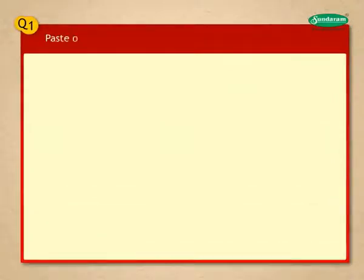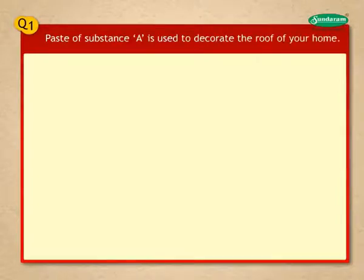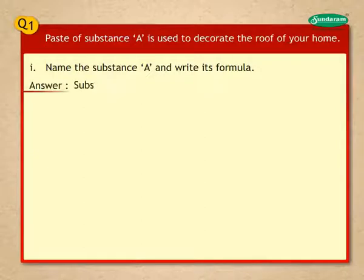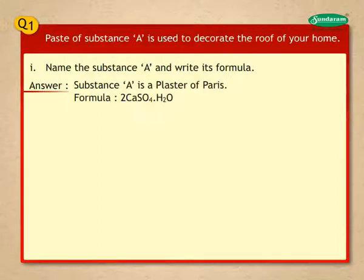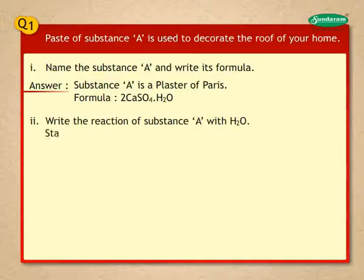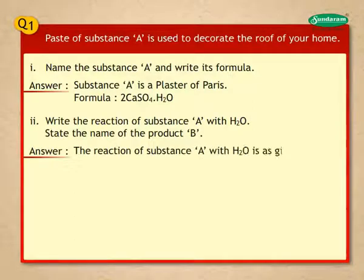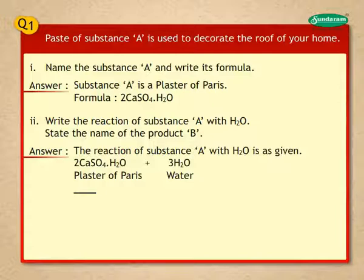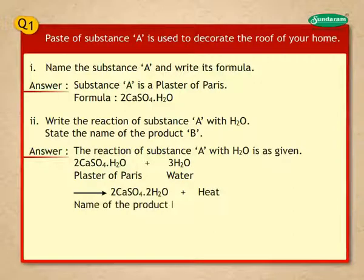Let us try to answer some questions based on what we have learnt. The paste of substance A is used to decorate the roof of your home. Name the substance A and write its formula. Answer: Substance A is plaster of Paris. Its formula is 2CaSO₄·H₂O. Write the reaction of substance A with H₂O and state the name of product B. The reaction is: 2CaSO₄·H₂O + 3H₂O → 2CaSO₄·2H₂O + heat. The name of product B is gypsum.